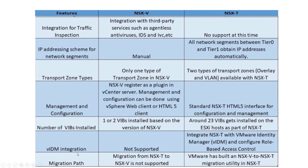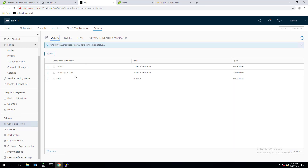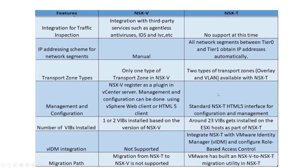For vIDM integration: NSX-V does not support it — all permissions are assigned via vCenter server. NSX-T can integrate with VMware Identity Manager (vIDM) for role-based access control. With NSX-T 3.0, it also supports LDAP. You can add users or Active Directory users and assign permissions directly within NSX-T.